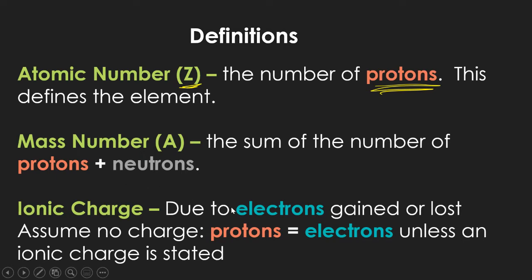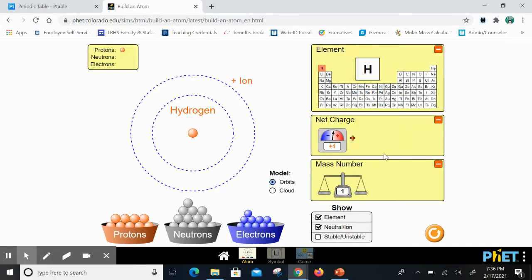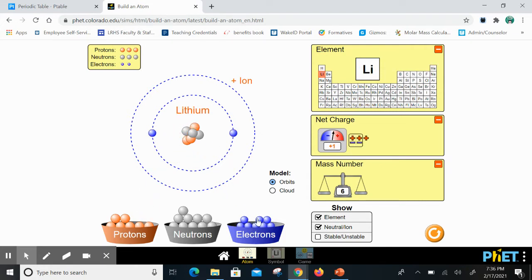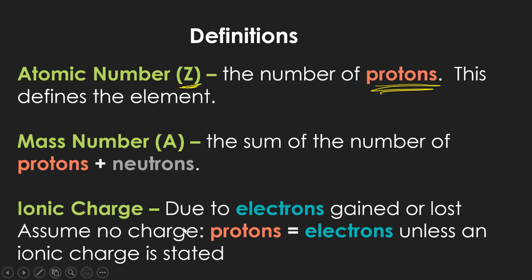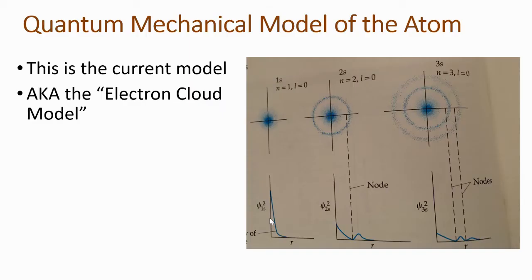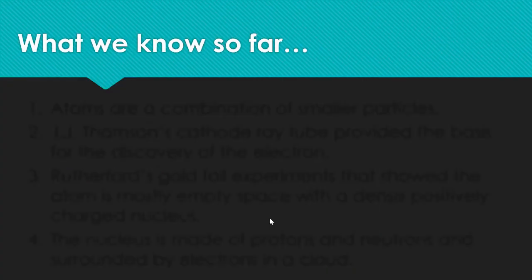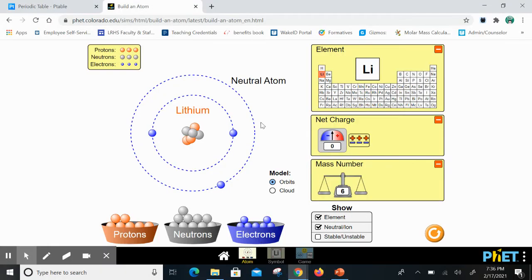The atomic number is the number of protons because that defines the element. The mass number is the sum of protons and neutrons — mass goes up only with protons and neutrons, not with electrons. Charge is due to electrons gained or lost. If there's no charge, protons equal electrons; if there is a charge, one of them is out of balance.